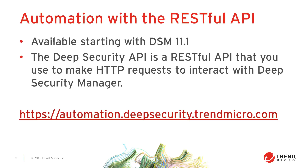Another feature available with Deep Security 12 is the ability to interact with the Deep Security Manager using our RESTful API. The RESTful API allows you to make HTTP requests to interact with the Deep Security Manager. Our SDK includes client libraries that help you use the API in Python, JavaScript via Node.js, and Java. For additional information, check out automation.deepsecurity.trendmicro.com.